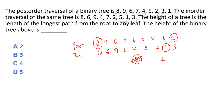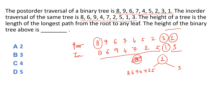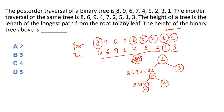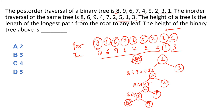1 ko in-order traversal mein locate kiya. 1 ke right subtree mein 3 hoga, left subtree mein 8, 6, 9, 4, 7, 2, 5 honge. Post-order se right se left chala: 3 mila → root ka right; then 2 mila → 2 ke left mein 8, 6, 9, 4, 7 aur right mein 5. Next post-order se 4 mila, phir 7, phir 6 → 6 ke left mein 8 hoga, 8 ke right mein 9 hoga. Post-order mein nine pehle phir eight — yeh leaf nodes hain.